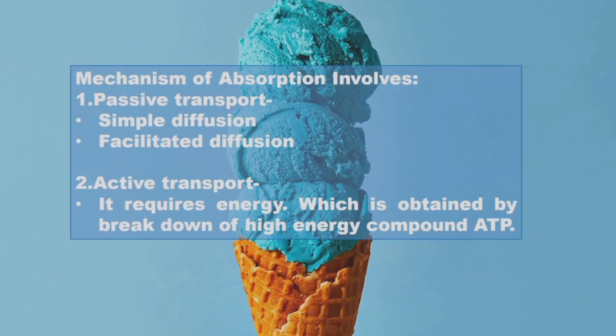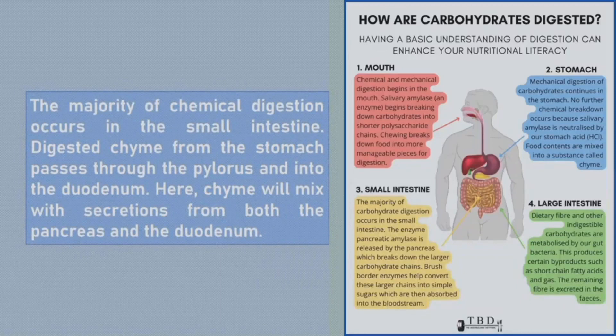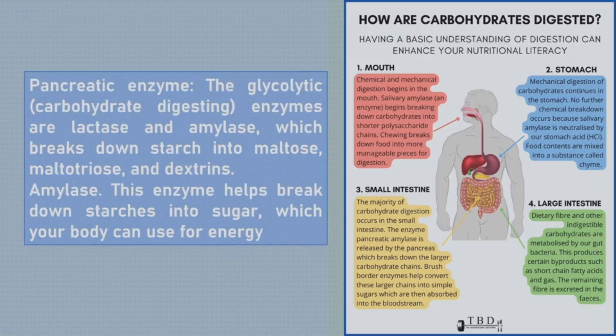Active transport requires energy, which is obtained by the breakdown of the high-energy compound ATP. The majority of chemical digestion occurs in the small intestine. The digested chyme from the stomach passes through the pylorus and into the duodenum, where it mixes with secretions from both the pancreas and the duodenum.